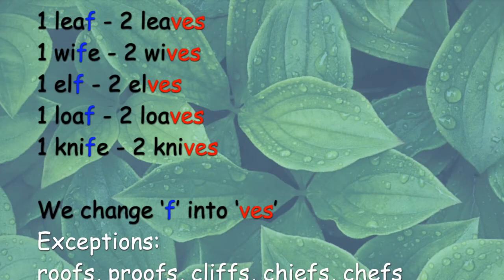One leaf, two leaves; one wife, two wives; one elf, two elves; one loaf, two loaves; one knife, two knives. We change F into VES.